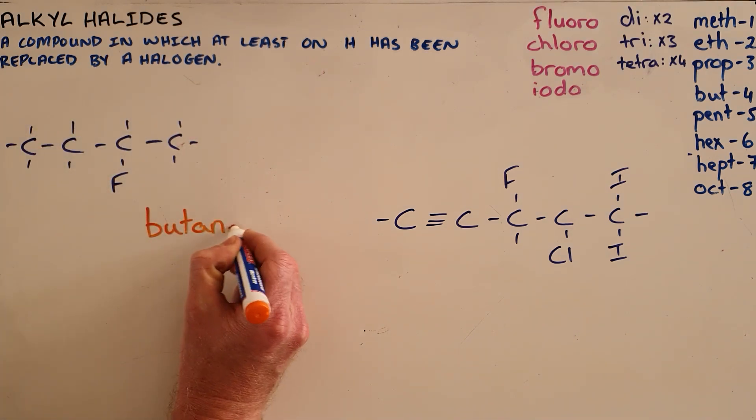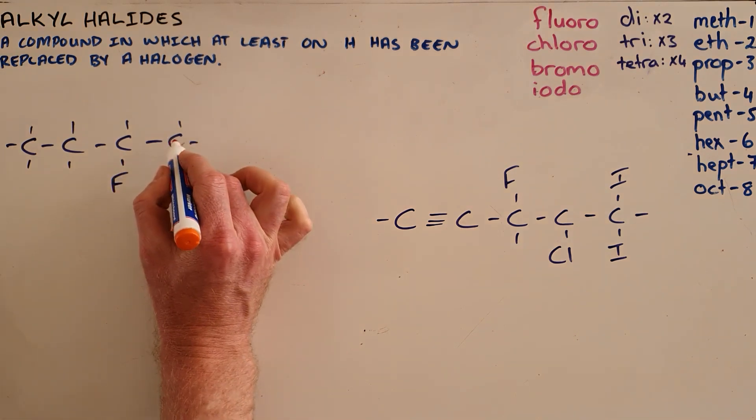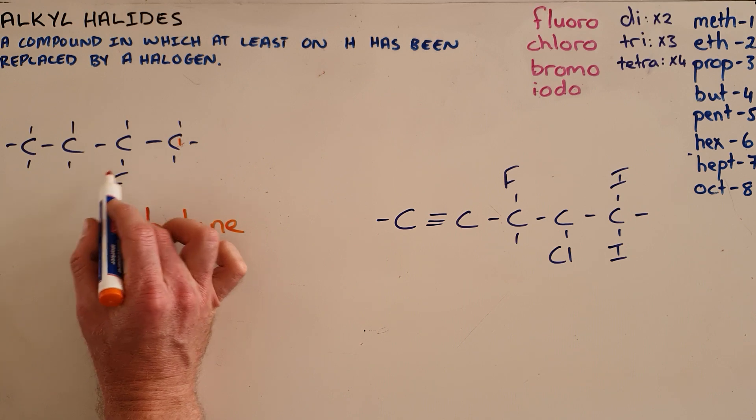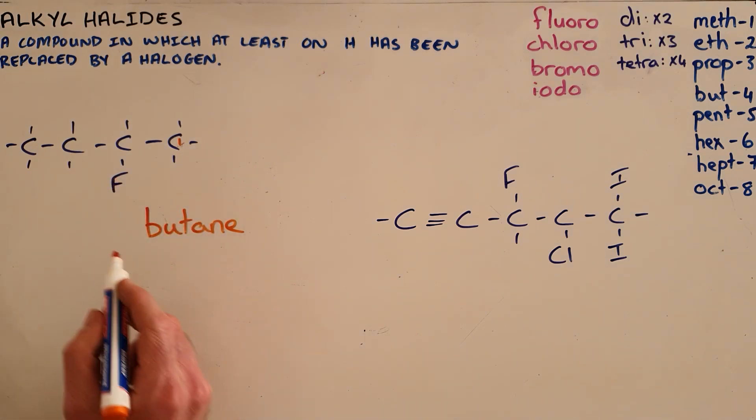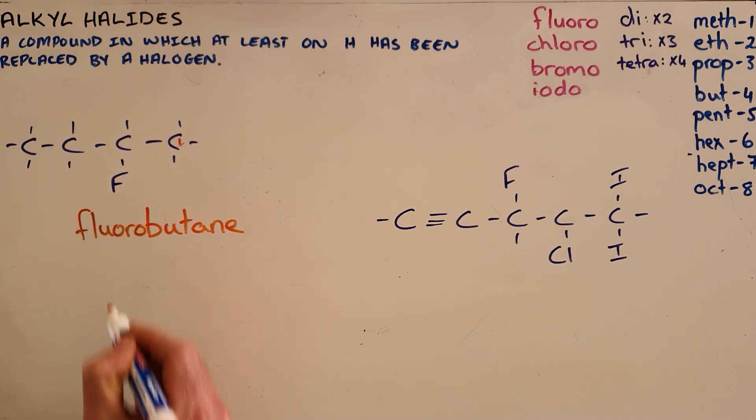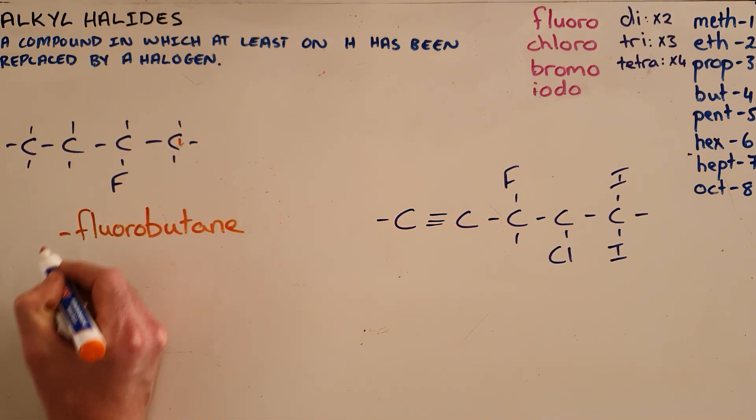But now, by numbering from the right-hand side, we can see there is a fluorine in place of a hydrogen on the second carbon. We would therefore name this fluorobutane. The position is important, so we call it 2-fluorobutane.